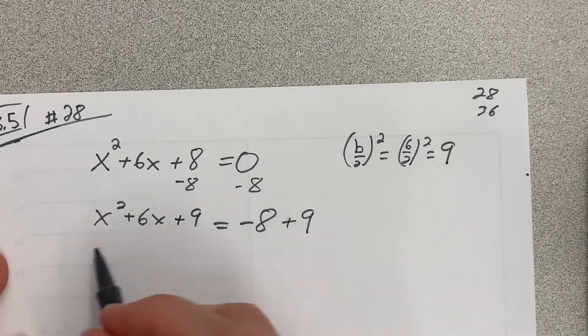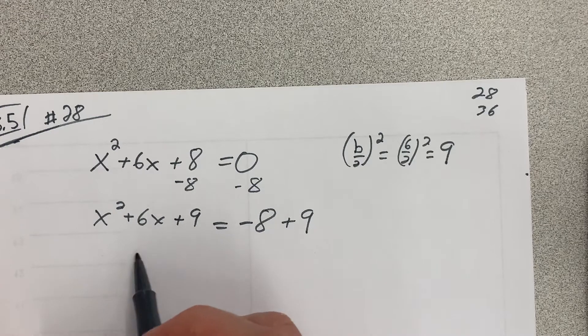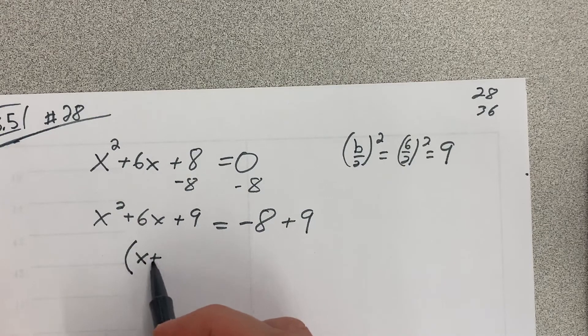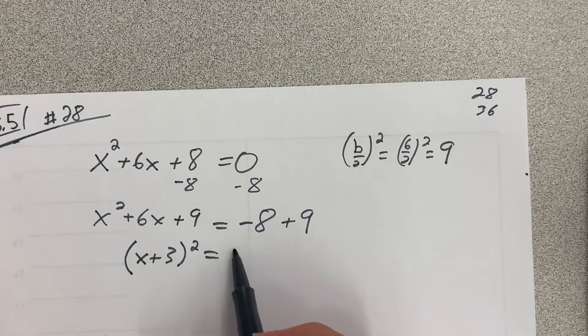So let's clean this up a little bit. So if I do that, then this is a perfect square, and it's going to be x plus 3 squared. On the right, I'm going to have 1.